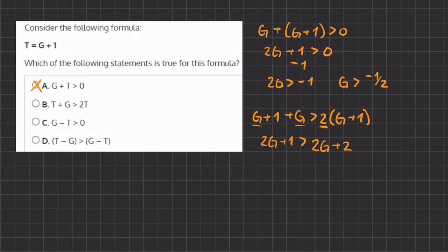Now, this is incorrect because we have 2G plus one that is saying that it's greater than 2G plus two. But this side has to be greater because we are adding two. All right. So now that we know that B is eliminated, let's move on to C.